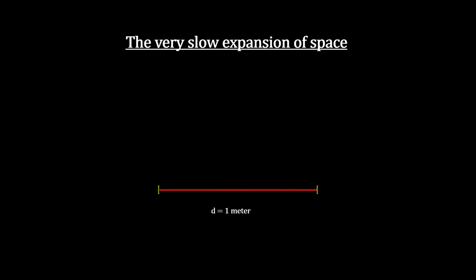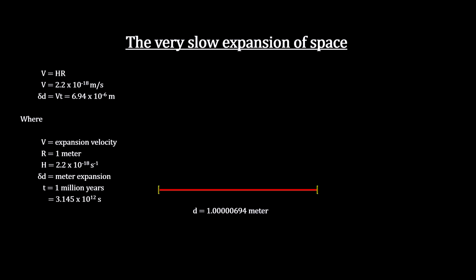The real expansion is very slow. If we take a look at what the expansion does to one meter, we see that it would take a million years to expand by just seven millionths of a meter. That's way too slow to ever notice or even measure in a lab in a lifetime. And it is why it's so easy to overcome it with local gravity out to the Andromeda galaxy.